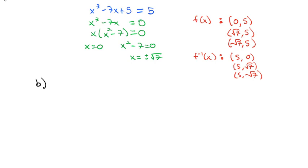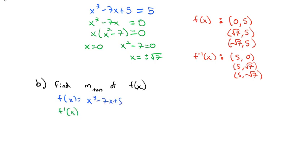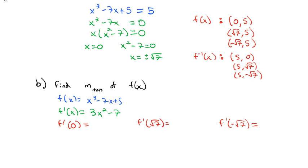Now that we know the x and y coordinates we're working with, we still need to find the slope of the tangent line of f of x, because the slope of the tangent line of the inverse is just the reciprocal of that slope. The function is x cubed minus 7x plus 5, so the derivative is 3x squared minus 7. We need to find the slope at each of the three x-coordinates we found. We'll find f prime of 0, f prime of square root of 7, and f prime of negative square root of 7.